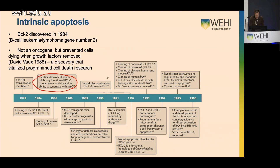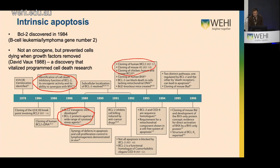BCL2 transgenic mouse studies, much of which was done at WEHI, showed that BCL2 protects against a wide range of cytotoxic agents to prevent cell death. A number of other pro-survival BCL2 family members acting similarly were identified in 1993, such as MCL1 and A1. Then in 1995, apoptosis was separated into two pathways: the intrinsic pathway and a BCL2-independent pathway termed death receptor apoptosis.